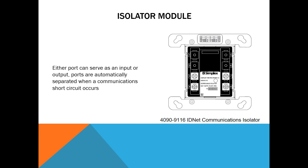The Isolator Model — this is a main model. In case there is a short circuit, the isolator model is activated to protect the loop.